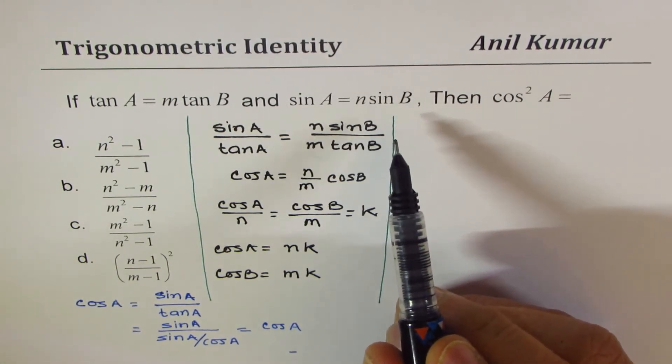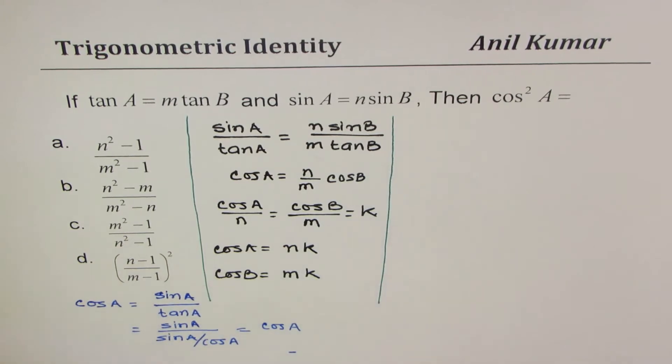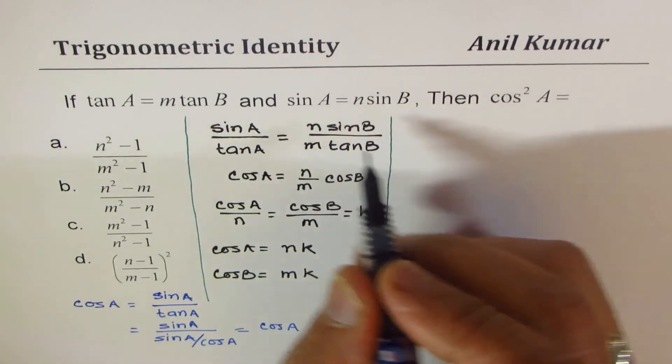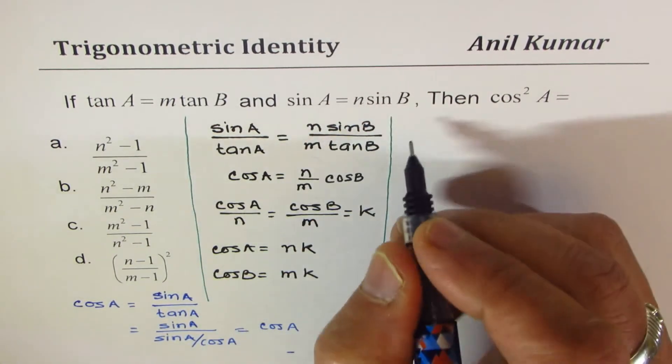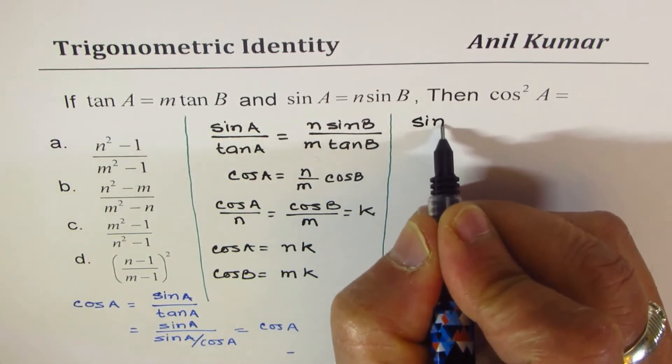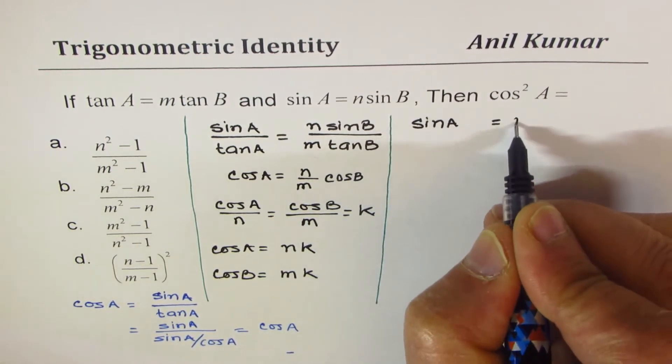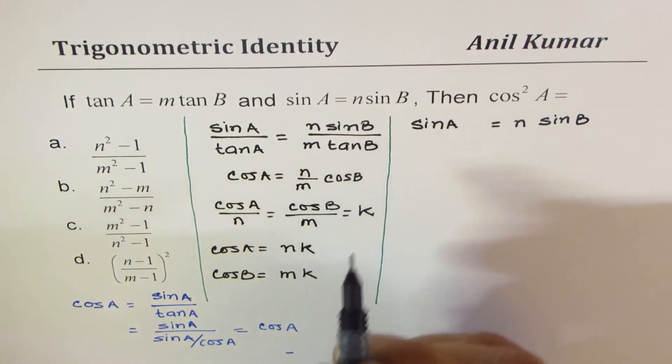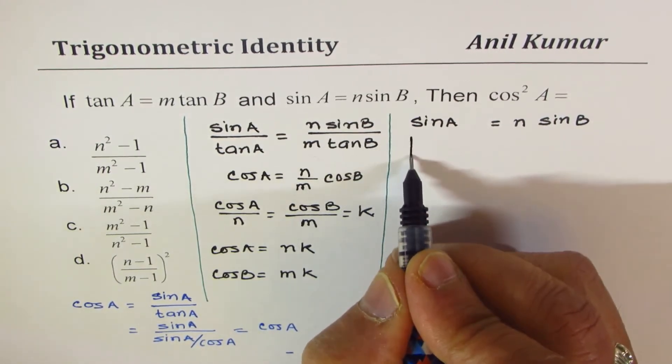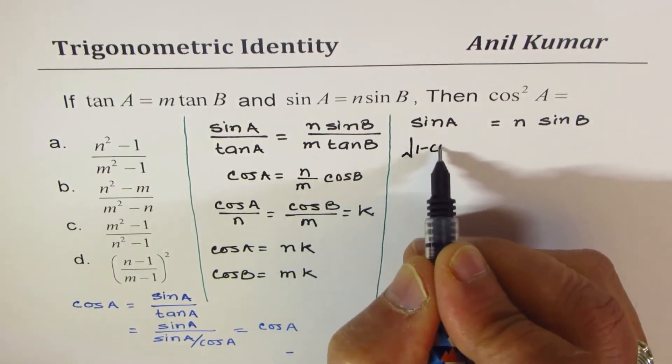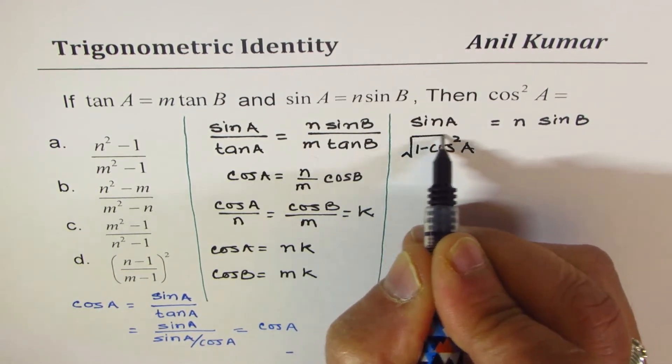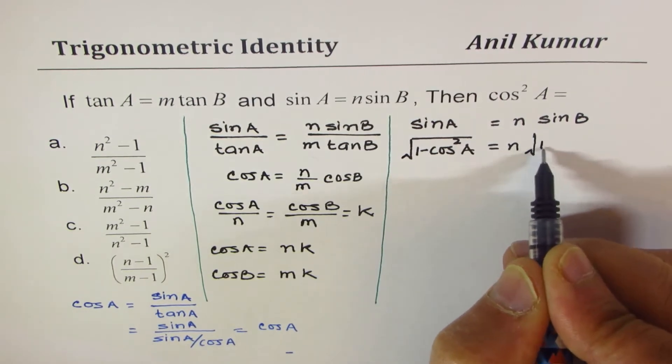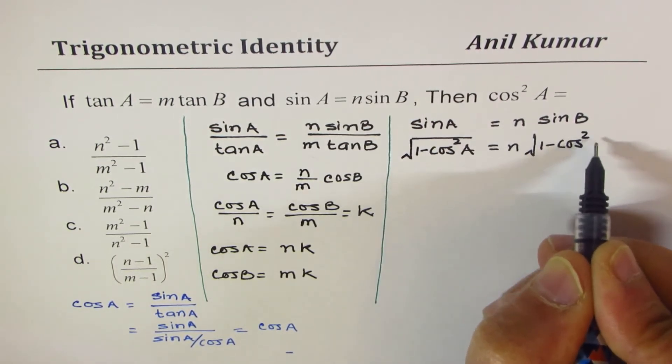Now, we need to figure out what is cos A. What we can do is we can look into cos A. Sin A equals n sin B. So we know that sin A is equals to n times sin B. Now, sin A can be written as square root of 1 minus cos square A. Does it make sense to you?